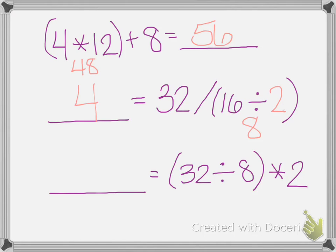And the last one, again, we have 32 divided by 8 in parentheses. 32 divided by 8 is 4. And then 4 times 2 is 8.